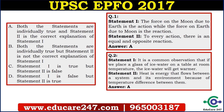Statement 1 is: the force on the moon due to earth is an action, while the force on the earth due to moon is the reaction. Statement 2 is: for every action there is an equal and opposite reaction. This is Newton's third law. Both statement 1 and statement 2 are individually true, and the second statement is the correct explanation of the first statement. So here the answer is A.